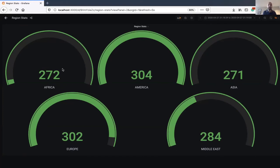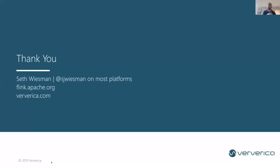That's a whirlwind tour of Flink — covering everything from event-driven applications to real-time reporting to batch processing. When we leverage it with a tool like Pulsar, we have a great way of solving so many production business concerns. Thank you all so much for having me. You can follow up with me at SJ Wiesman on Twitter, GitHub, and Apache, or at seth@veriverica.com.